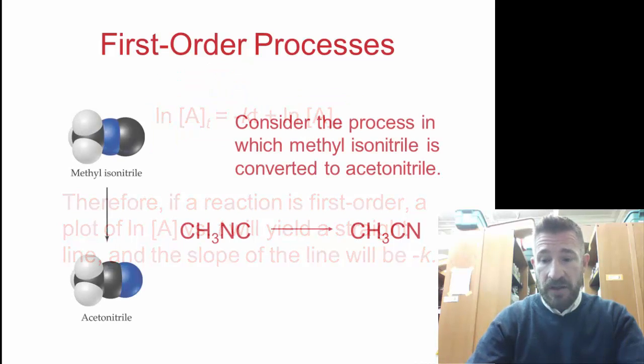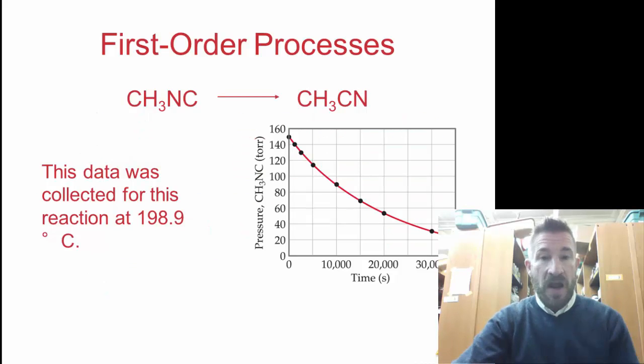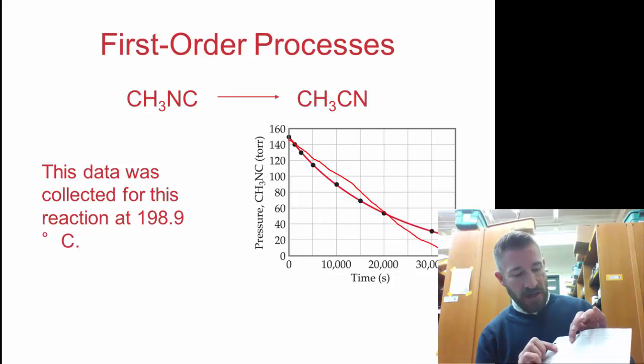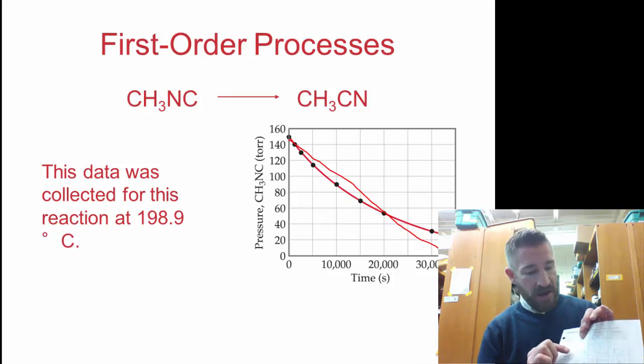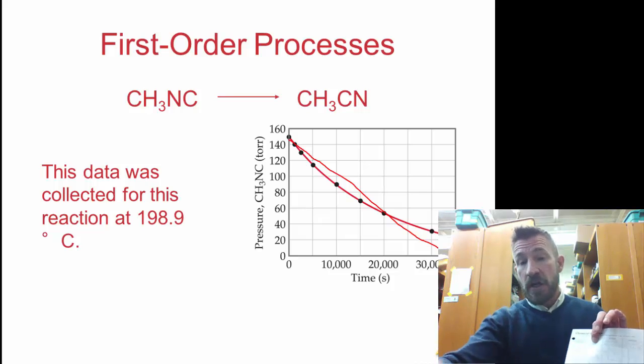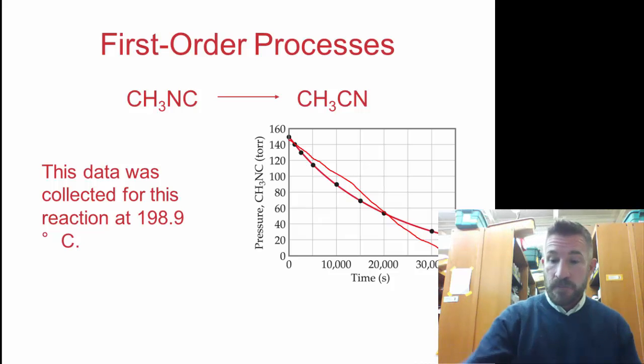Let's look ahead and look forward. When we do this graph for the substance, basically if it's zero order, you would see a straight line in this one. Under the plot needed for a straight line, you would have concentration of A versus time. Instead of a slope like we see here, it would give you a straight line.